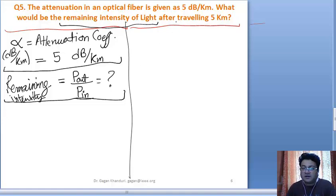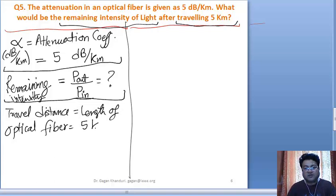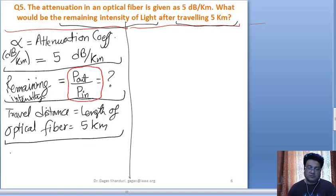One more information is there: the light has traveled 5 kilometers. So travel distance of light, or you can say the length of optical fiber, is given as 5 kilometers.